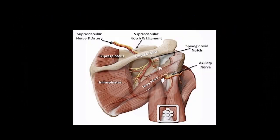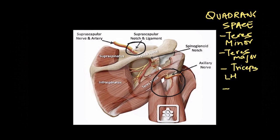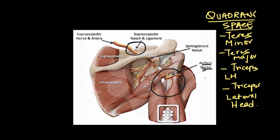It's also important to note another nerve that supplies the shoulder joint — the axillary nerve, which is the terminal branch of the brachial plexus. Here I have delineated the suprascapular notch area with the underlying nerve and artery, and laterally the quadrangular space, which is bounded superiorly by teres minor, inferiorly by teres major, medially by the long head of triceps, and laterally by the lateral head of triceps. The axillary nerve emerges from the quadrangular space posteriorly to give branches to the deltoid muscle as well as the shoulder joint.